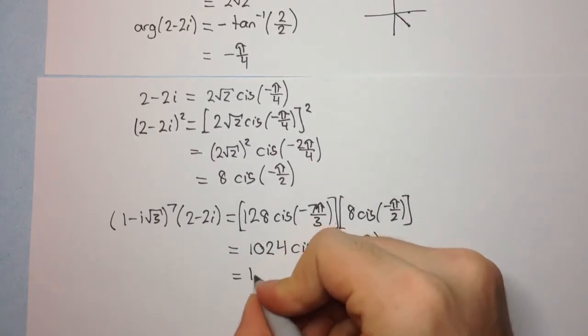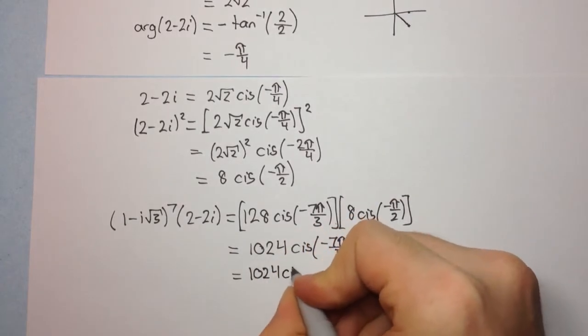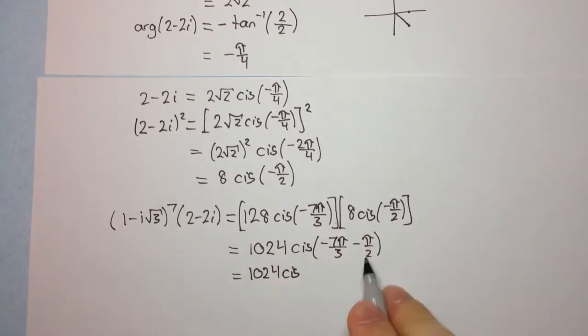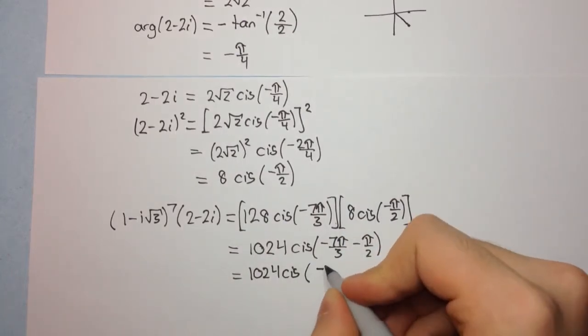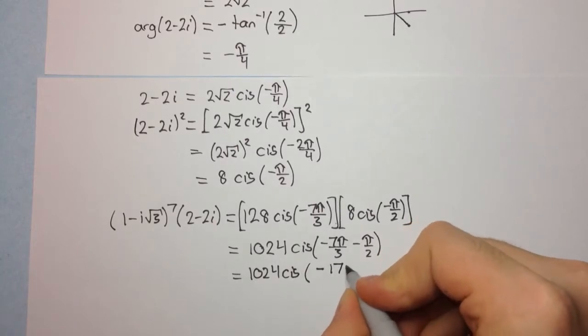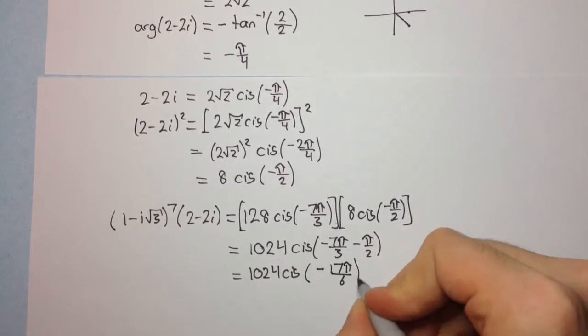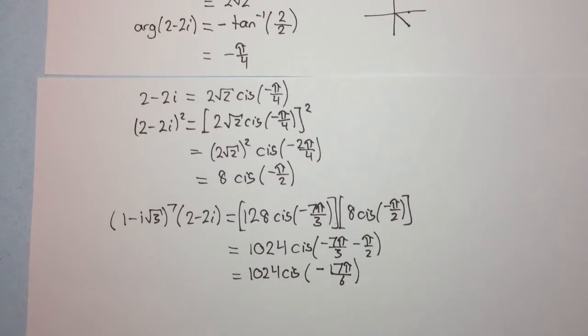So what's that going to be? Well, let's work that out. That's going to be minus 17π/6, I believe. Let's just double check that. Minus 7 divided by 3, minus a half. Yep, -17 over 6. 17π over 6.